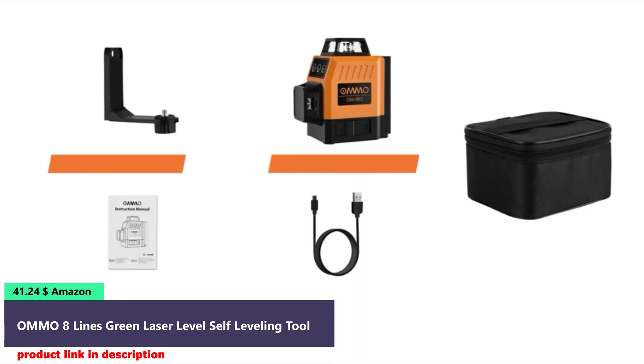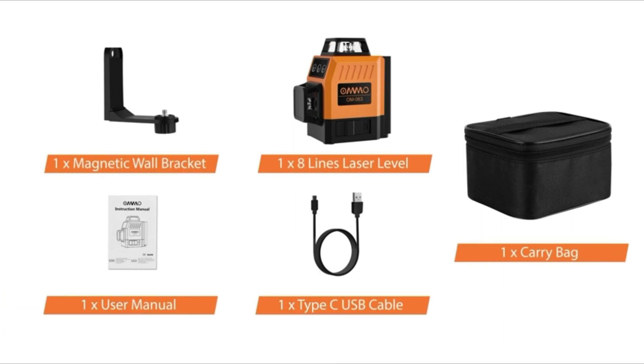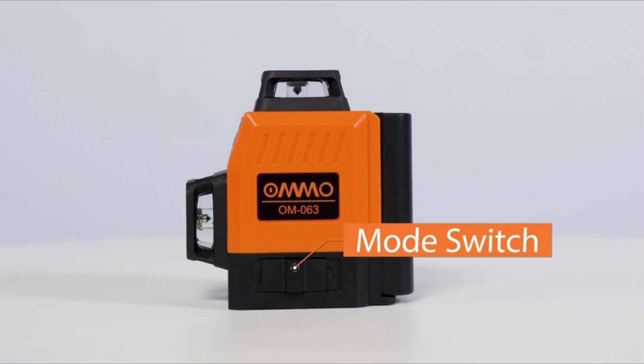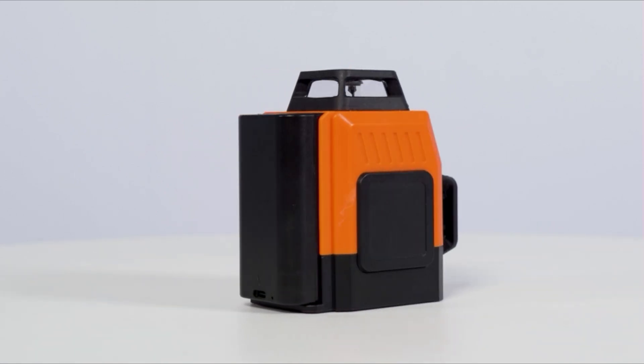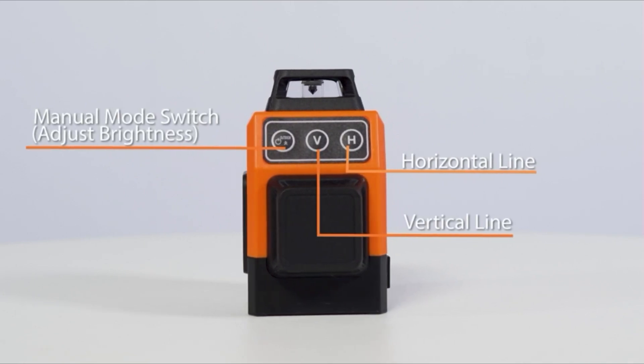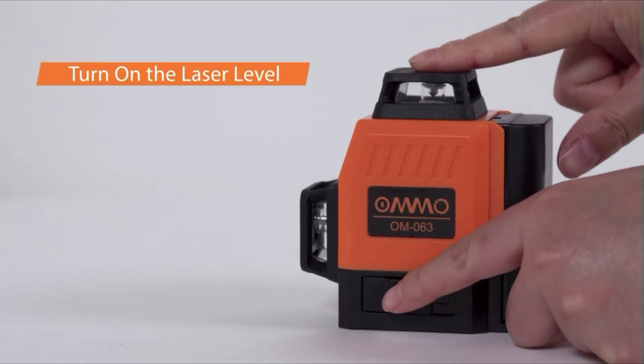Amo laser level has 1 by 360 degrees horizontal line, 1 by 360 degrees vertical line, and 8 laser lines cover the floor, walls, and ceiling all around the room. Each button on this laser level corresponds to a single laser line, you can easily choose to turn on/off any laser line.